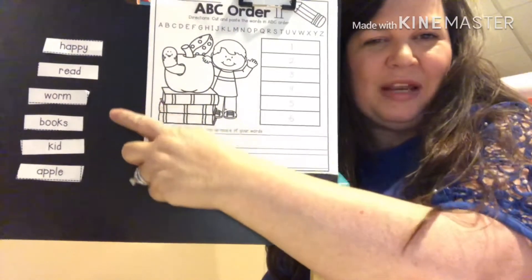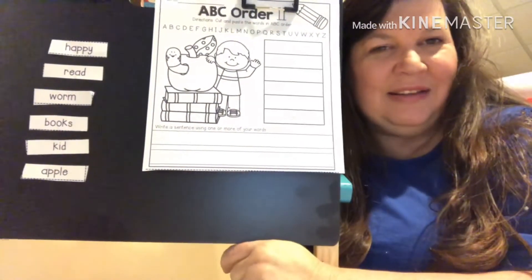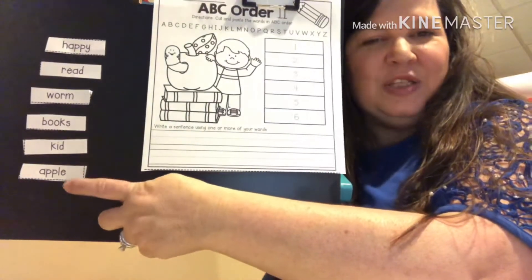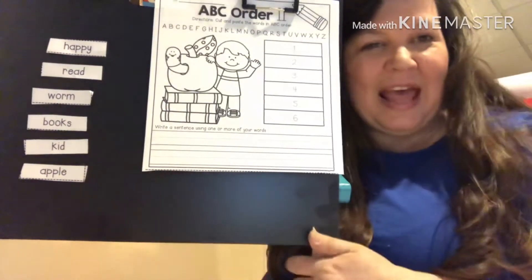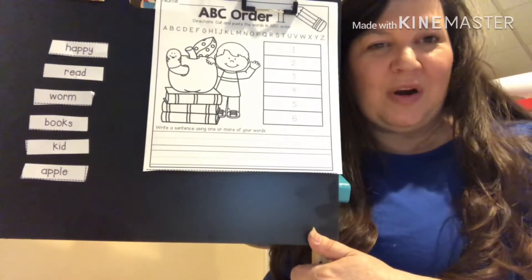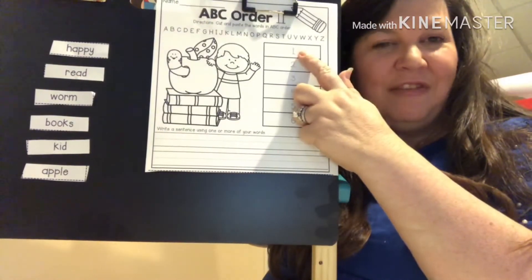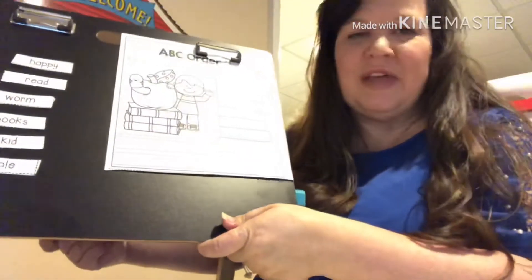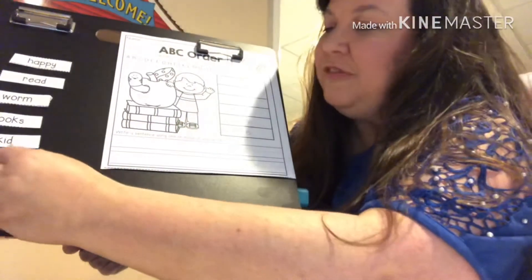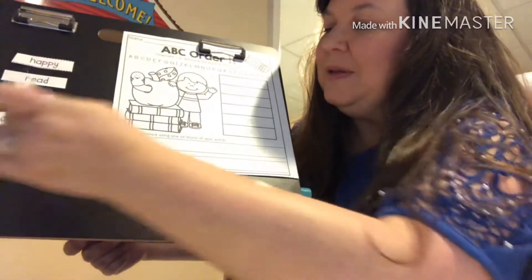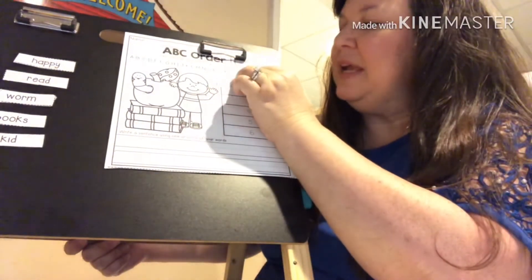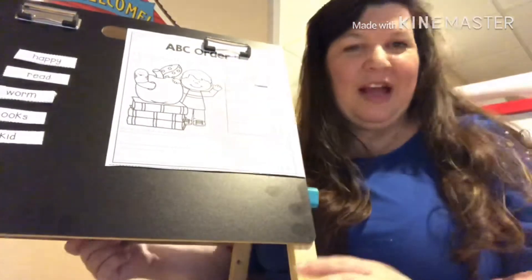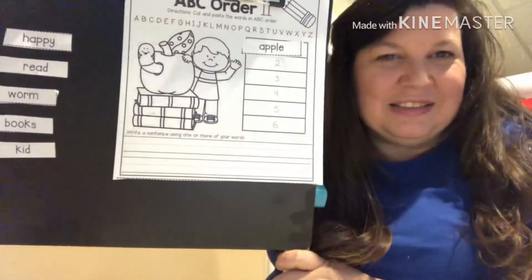Let's look through here. Are there any words that start with A? You're right — apple! So because apple starts with A, it's going to be the first word and you're going to put it in the very first blank. Mrs. Romer is going to do that — I'm going to pull off apple and put it in the very first blank. There we go, now we've got it.